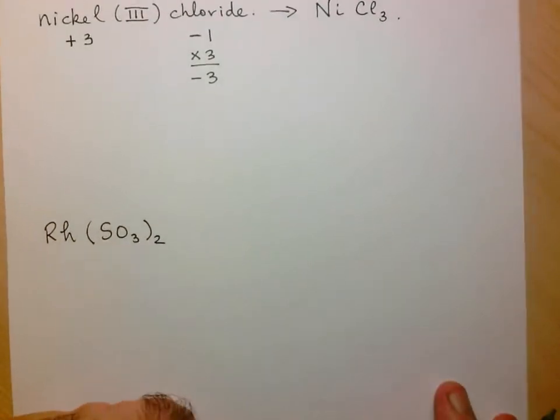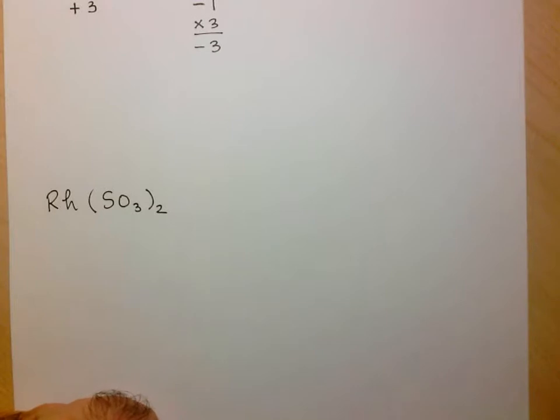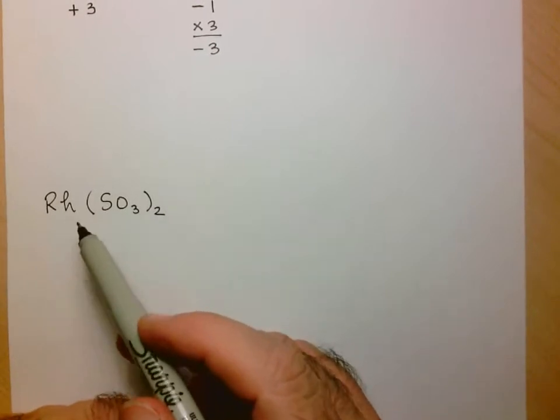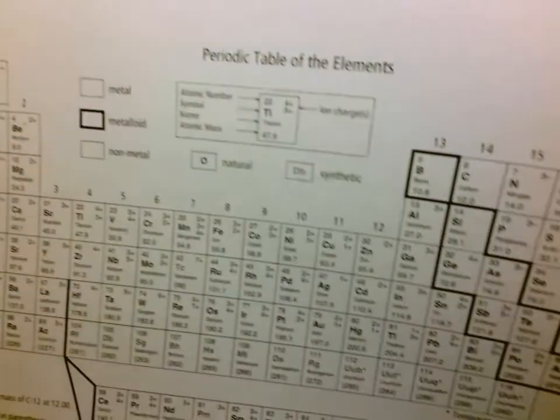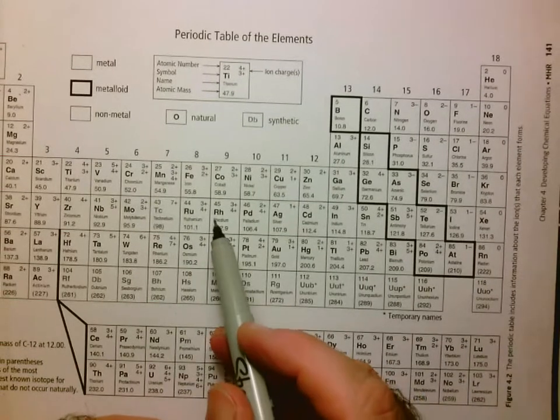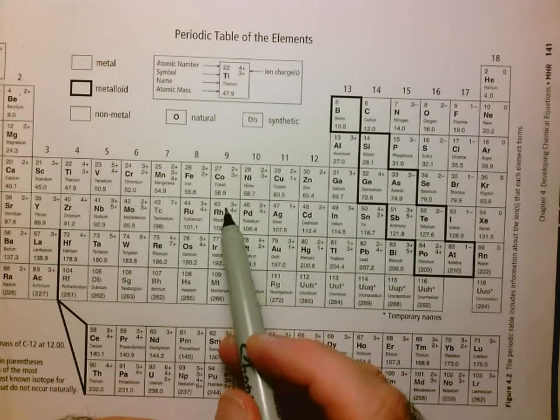Let's go now to the example where we're given the formula, and we want to find the name. So first of all, Rh, not something we've worked with very often, or perhaps at all at this point. So we go to our periodic table, and we find Rh, there it is, it's rhodium, and it is, in fact, a multivalent metal.